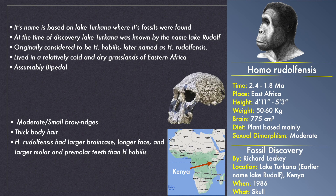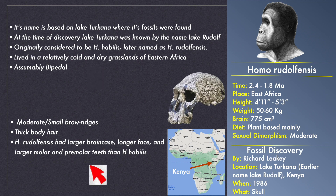So far we have discussed the evolutionary adaptations at the genus level. Now let's see the role of individual species within the genus Homo, beginning with Homo rudolfensis. The name is based on Lake Turkana in Kenya, known at the time as Lake Rudolph, where its fossils were discovered in 1986 by Richard Leakey. Homo rudolfensis lived in the relatively cold and dry grasslands of eastern Africa and is assumed to have been bipedal. They had residual ape characteristics like thick body hair and large molar and premolar teeth, but possessed a large brain of 775 cubic centimeters and small brow ridges. They were about 5 feet tall, weighed about 55 kilograms and ate mainly plant-based food.